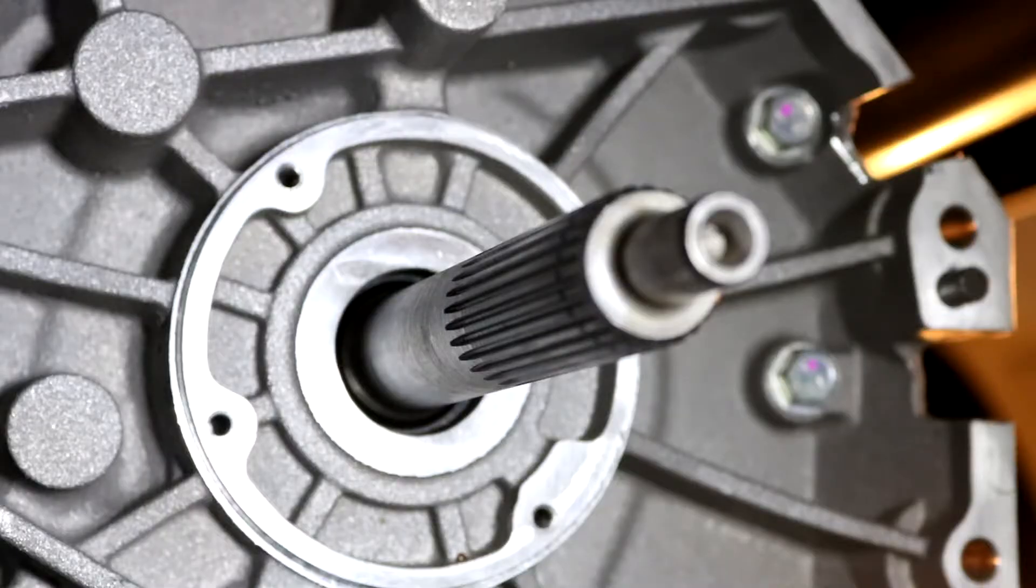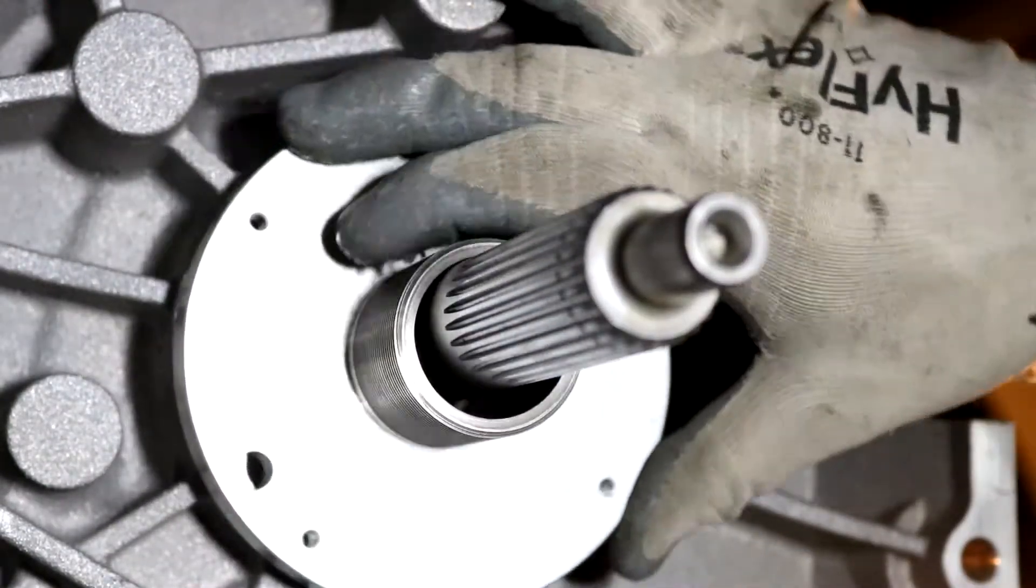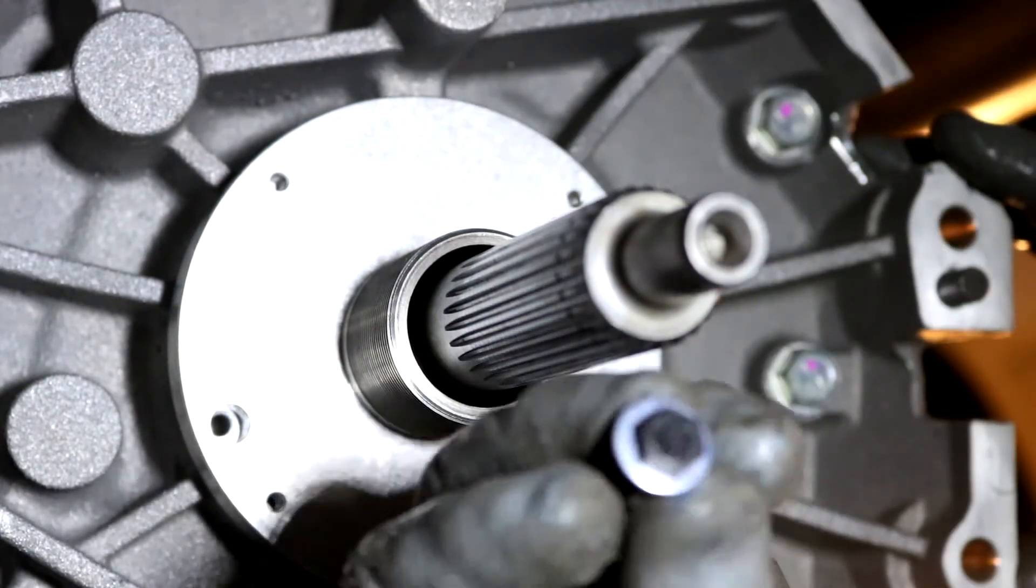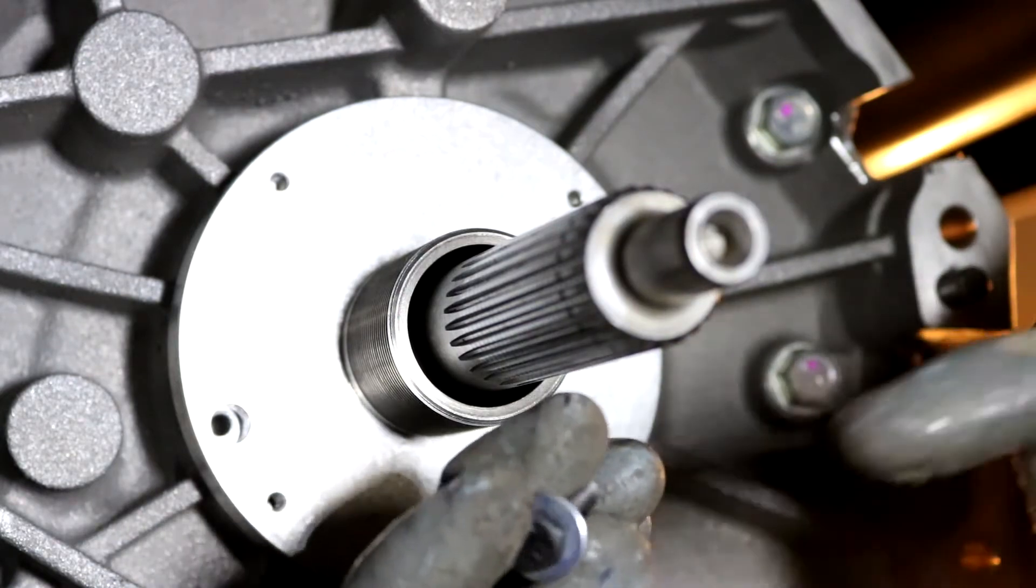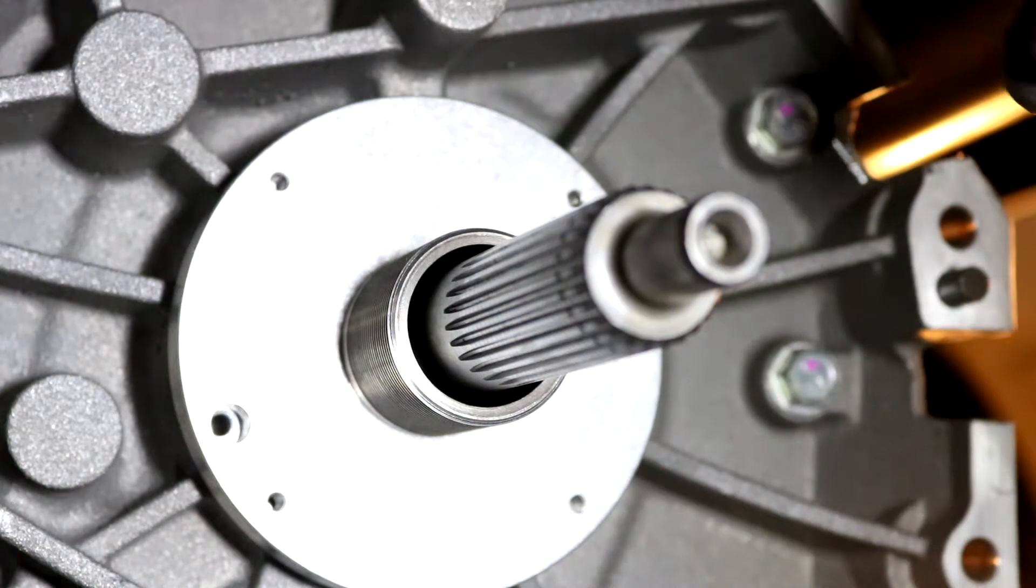So with the bell housing on, I can now install my hydraulic release bearing. First thing I need to do is install the adapter plate which just slides over like this. Now these bolts didn't come with any kit and it was a little difficult to find out what they were, but they are a 10.9 M6 one-inch bolt. I'll throw a little Loctite on it and then torque it down.